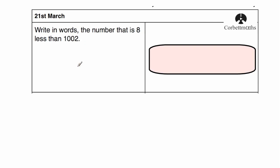Okay, let's have a look at the answers. The first question says, write in words the number that is 8 less than 1002. So we're going to have to find the number that is 8 less than 1002 and then write the answer in words. We're going to do subtraction. We've got 1002 and we're going to take away 8. 2 take away 8, we can't do, so we're going to need to borrow. We've got a 0 and a 0, so we're going to need to borrow from the 1000. Cross that out, put the 10 there.